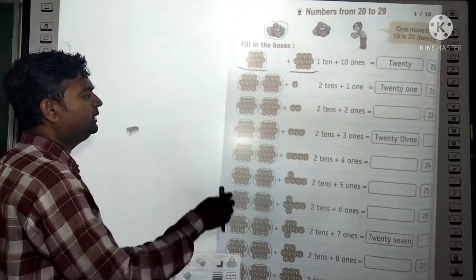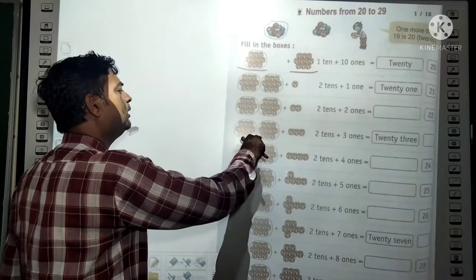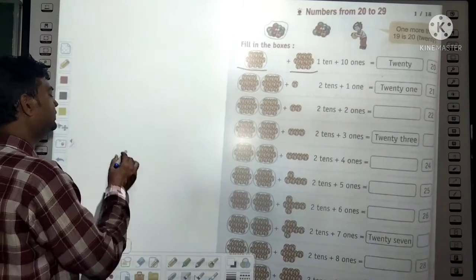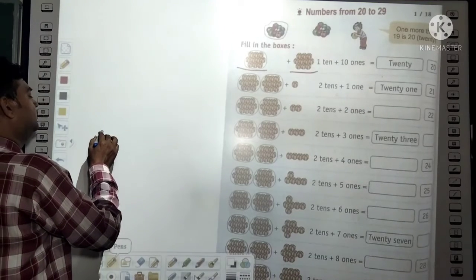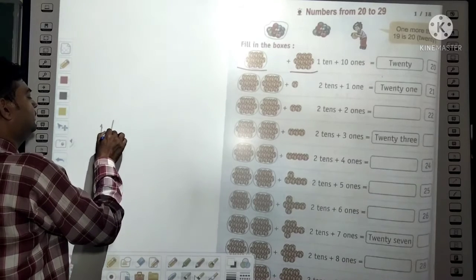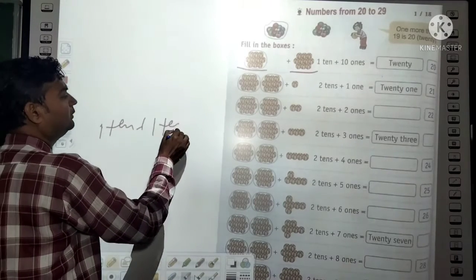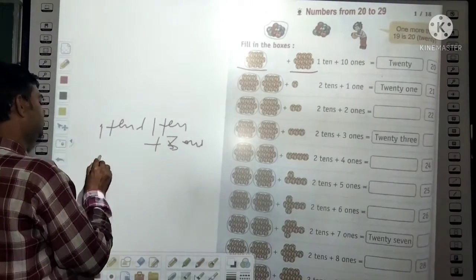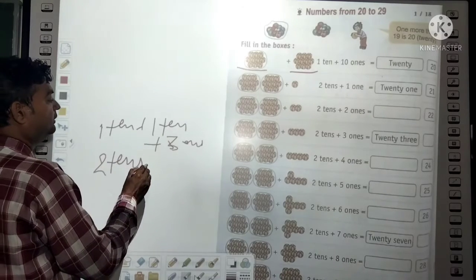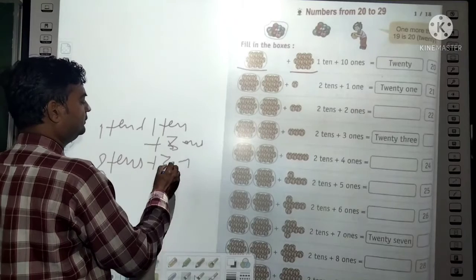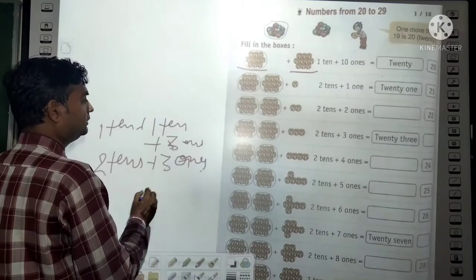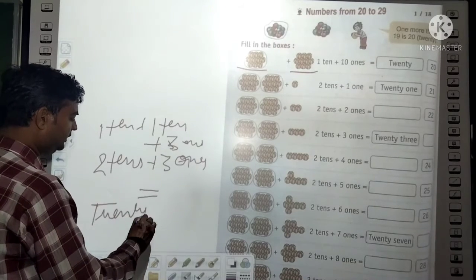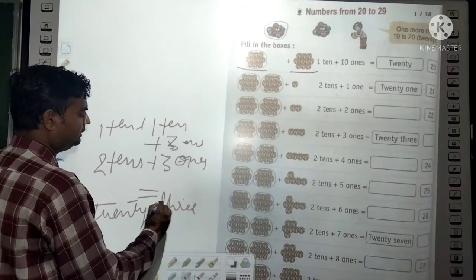In the same way, here are given 2 groups of 10. So 1 ten + 1 ten + 3 ones equals 23. The spelling is T-W-E-N-T-Y T-H-R-E-E — 23.